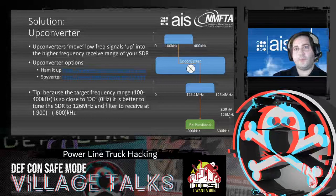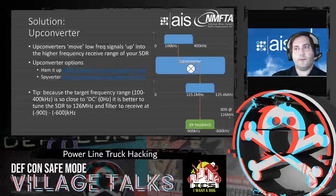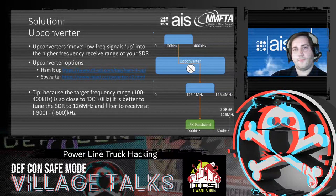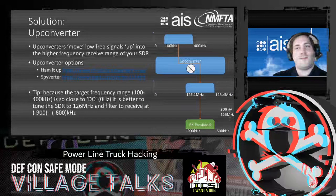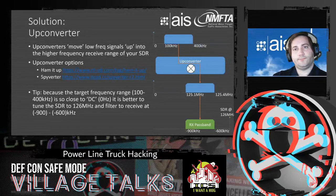To get around this, we used upconverters. The Ham It Up upconverter mixes our signal with an intermediate frequency of 125 MHz; the SpyVerter uses 120 MHz. Once near 125 MHz, we receive it with the radio and condition the signal in software. We got improved quality by tuning to 126 MHz rather than directly on 125 MHz, allowing a bandpass filter to remove DC noise associated with the Ham It Up.